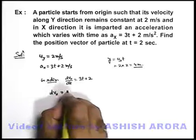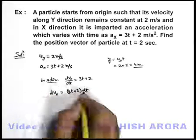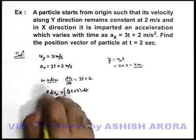It can be written as dvx = (3t + 2)dt, separating the variables, and if we integrate both the sides.